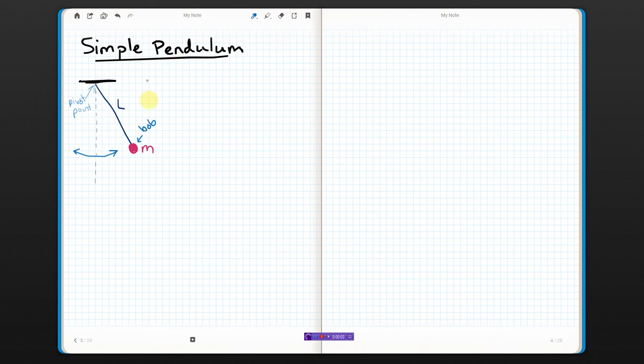Let's talk about simple pendulums. A simple pendulum is when you have a mass, also called the bob, on a long, non-stretchable string that we pretend has no mass.